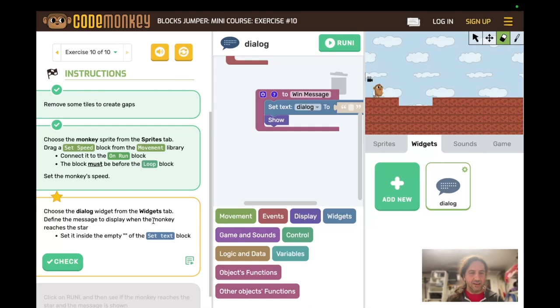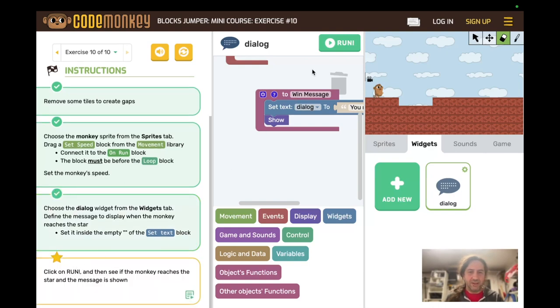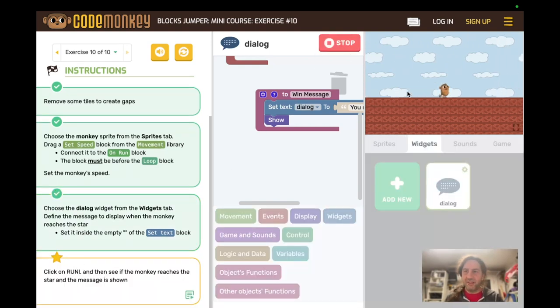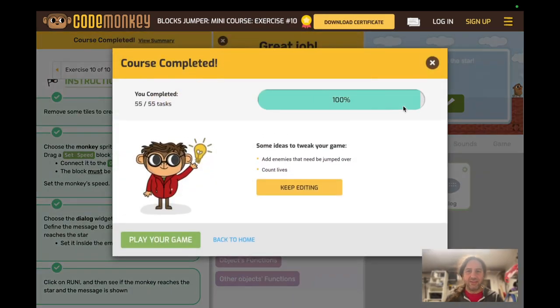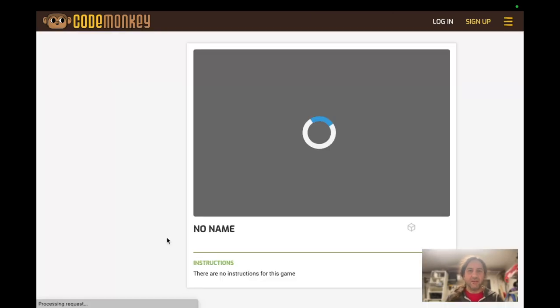And when the monkey reaches the star, set it inside the empty set text block. Oh, this is now empty. So you reached the star. Click on run. And let's see our new message and how we're running so much faster. Oh, and it took out, it filled in all of the holes before. So course completed. You can play your game to see it all on its own. Boom. No name game.